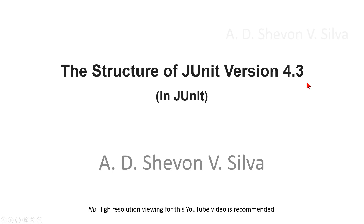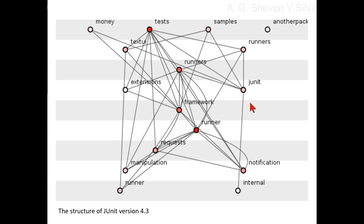Here you can see the structure of JUnit version 4.3. The 4.3 represents by far the largest structural change in the history studied here. Beneath the surface, the number of functions leaps from 564 in version 4.2 to 1394 in version 4.3. It will fall almost as dramatically in the next release.